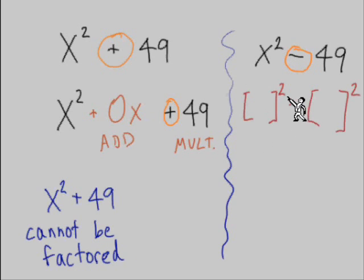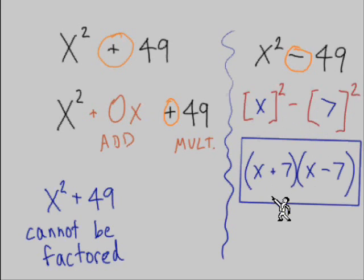So what we're going to do, we're going to set up these boxes with exponents of 2 on the outside. And think about what should go into this box, something to the second power to equal x squared. It's just a regular x. And in the second box, a 7 to the second power to equal that 49. And once we have the x and the 7 filled in, we know both sets of parentheses get the x and the 7. One set gets a plus, one set gets a minus.